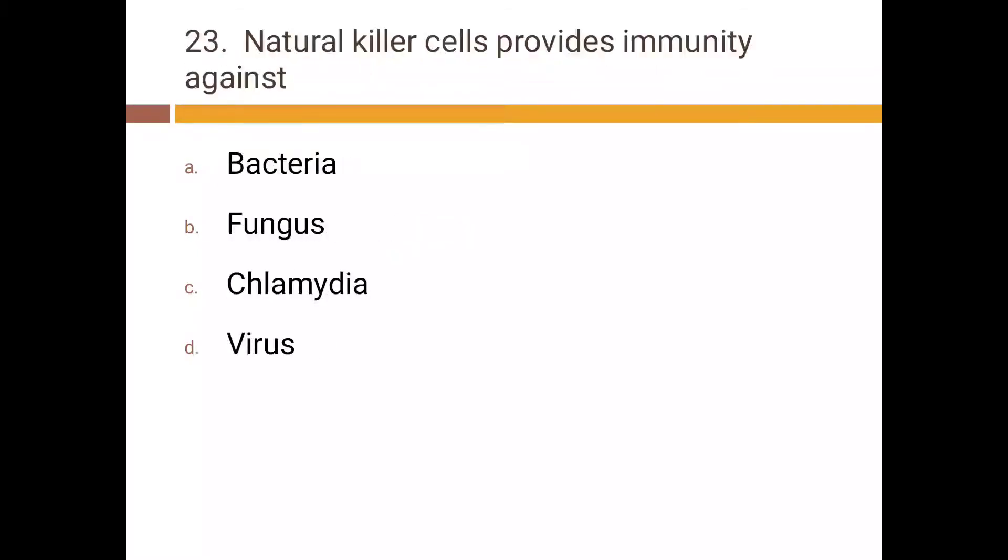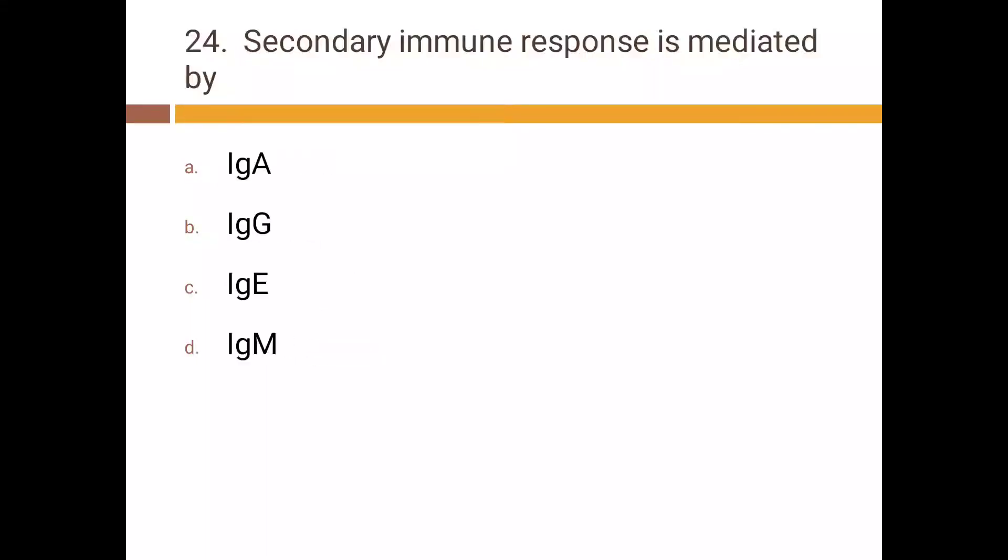Natural killer cells provide immunity against: a) bacteria, b) fungus, c) chlamydia, d) virus. Correct answer is d) virus. Secondary immune response is mediated by: a) IgA, b) IgG, c) IgE, d) IgM. Correct answer is b) IgG.